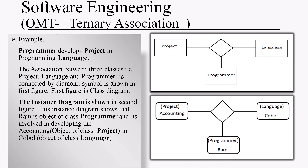The next example shows a ternary association and its instance diagram. The first figure shows the association between the three classes — Project, Language, and Programmer — meaning the programmer develops a project in some programming language. The second figure shows the corresponding instance diagram, where Ram is an object of class Programmer involved in developing Accounting, which is an object of class Project, in the programming language COBOL, which is an object of class Language.